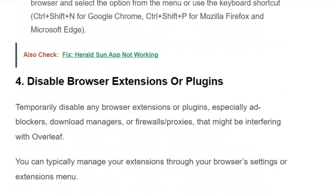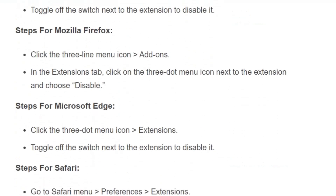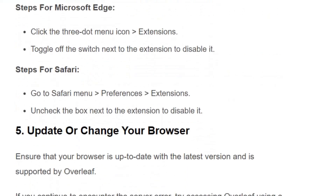Solution number 4: Disable browser extensions and plugins. For Chrome, click the 3-dot menu icon, go to More Tools, then Extensions, and toggle off the switch next to the extension. For Firefox, click the 3-line menu icon, click on Add-ons, then in the Extensions tab click the 3-dot icon next to the extension and choose Disable. For Edge, click the 3-dot menu and go to Extensions, then toggle off the switch. For Safari, go to Safari menu, Preferences, Extensions, and uncheck the box next to the extension.